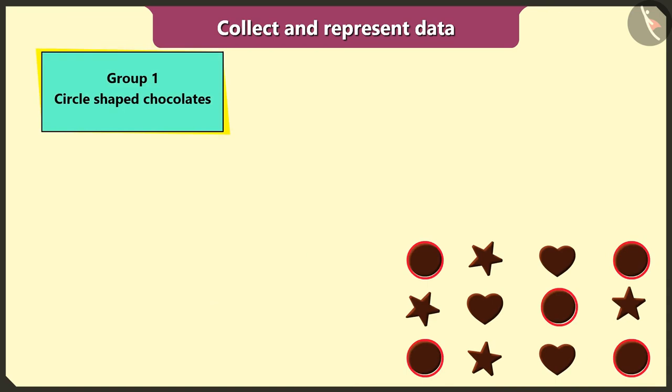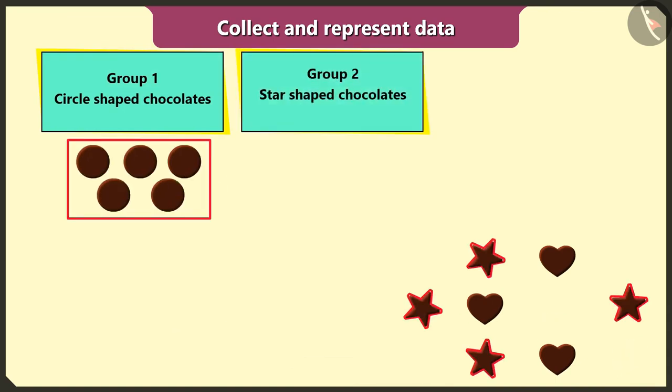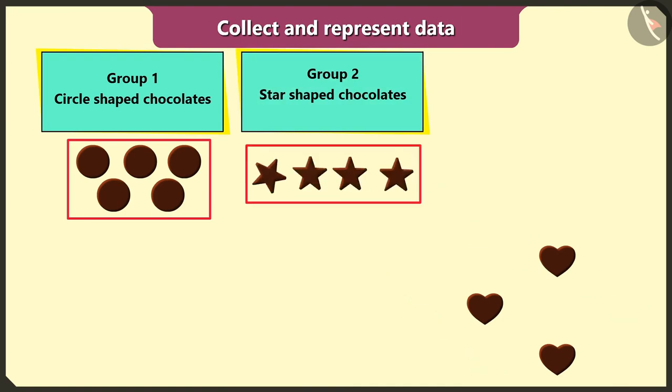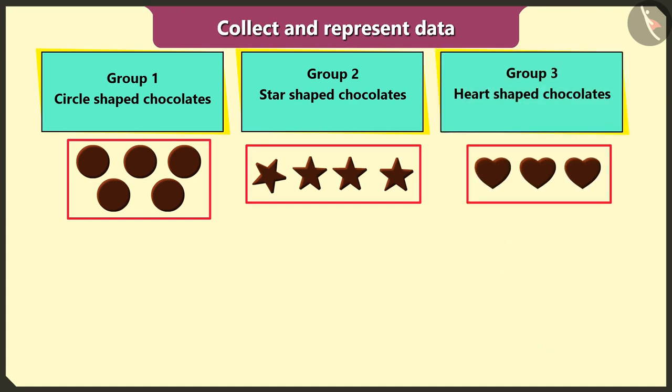First group of circle shaped chocolates. Second group is star shaped chocolates. And the third group is of heart shaped chocolates.